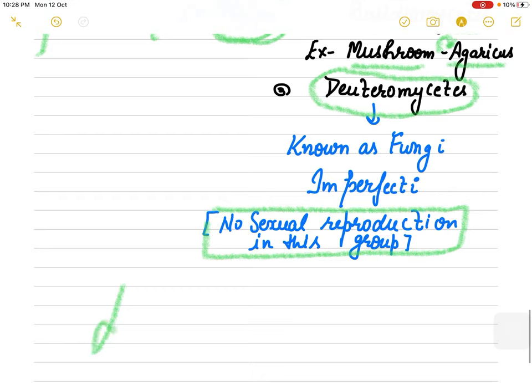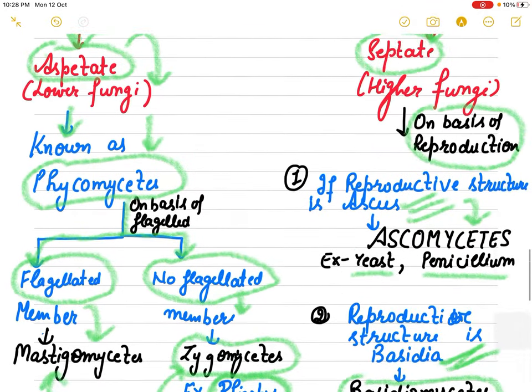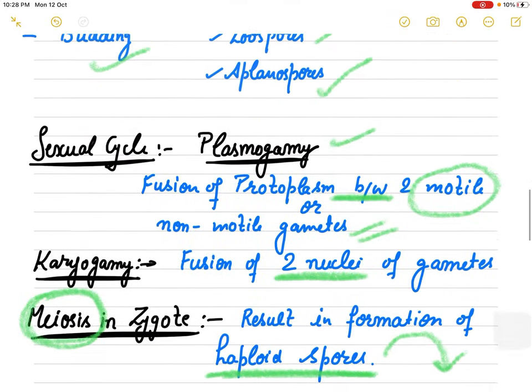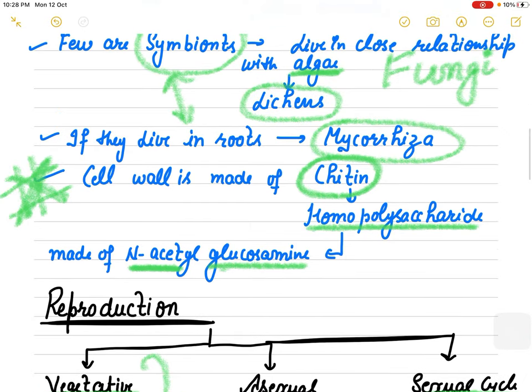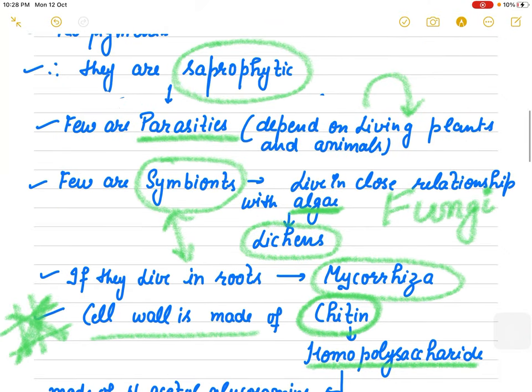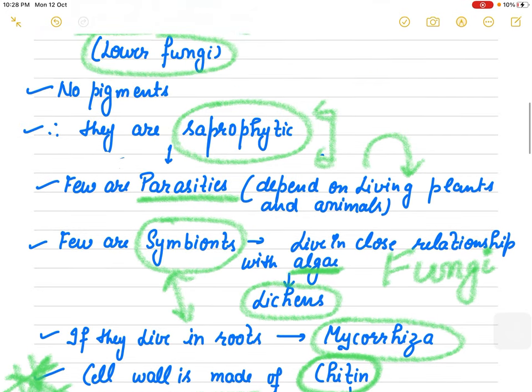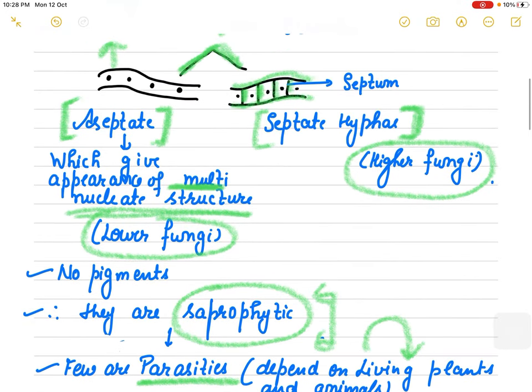So till then please draw this table carefully and learn the features of fungi very carefully like cell wall, symbionts, their mode of nutrition. They are very easy as well as very important for you to understand.